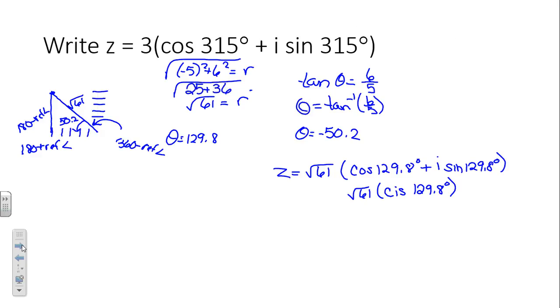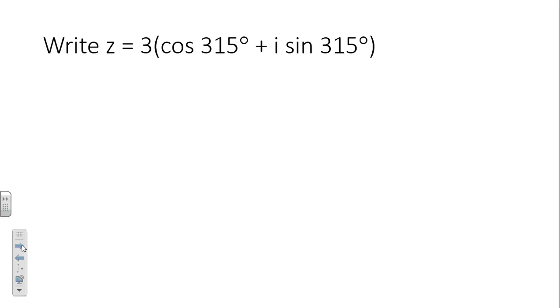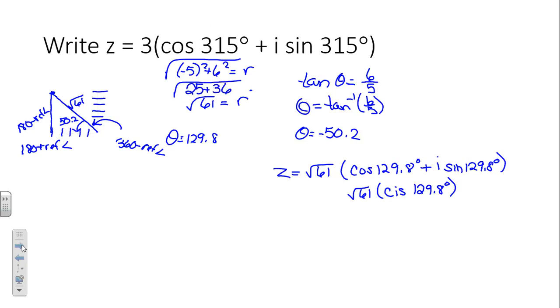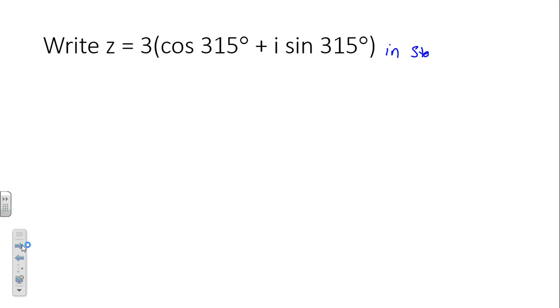Because if we calculate it guess what's going to happen? It won't be real, you're right it's complex, but it will take it back to the previous form. So if we take that square root of 61 times the cosine of 129 we will get negative 5 back and if we take the sine of 129.8 times that square root of 61 we'll get our 6 back. Absolutely, that's the a plus bi form.